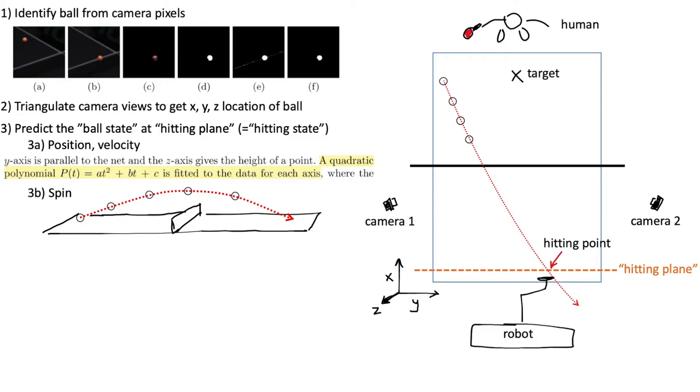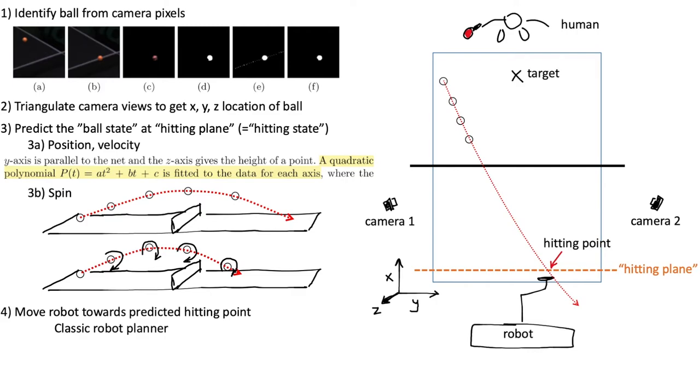First consider a trajectory without any spin. Now imagine the same initial velocity on the ball but with heavy topspin. The spin actually creates this new force pulling the ball downwards. This is known as the Magnus effect. By tracking the trajectory of the ball, which by the way the system is already doing, you can actually come up with an estimate of this Magnus force and you can then work backwards to figure out the spin that generated that force.